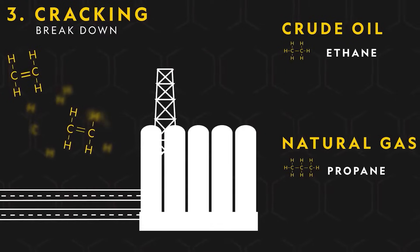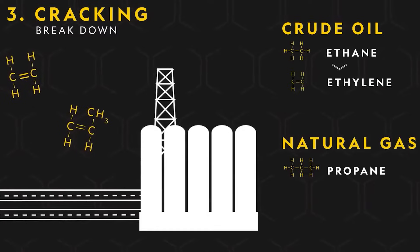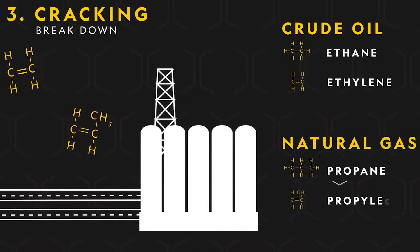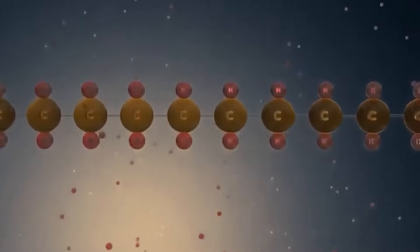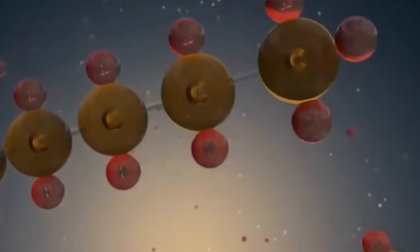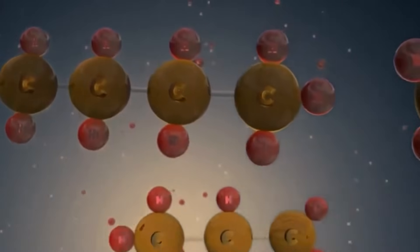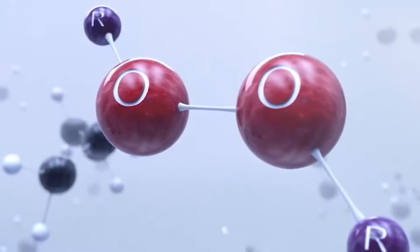Cracking is the procedure that's carried out on the ethane and propane fractions that have been extracted from the crude oil components. Through the process of cracking, the bigger hydrocarbon molecules that are present in these fractions are broken down into smaller molecules that are more useful, such as ethylene and propylene. The manufacturing of plastic requires the use of monomers, which are molecules of a smaller size.